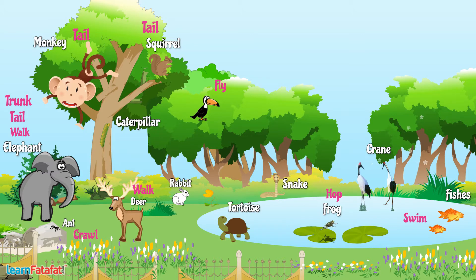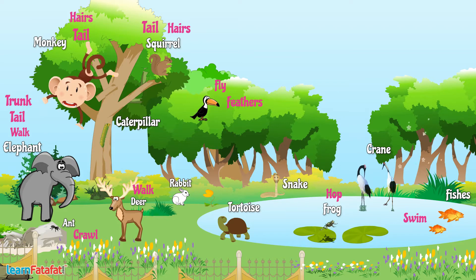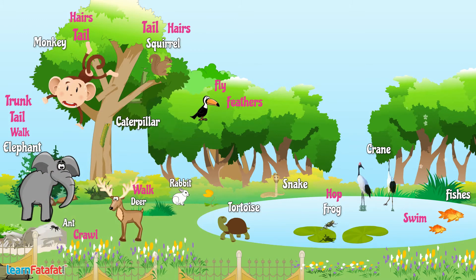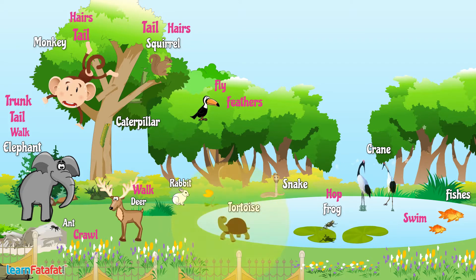some have feathers. Some animals live on trees, some on the ground, some in water, and some underground. Some can live on the ground as well as in water.